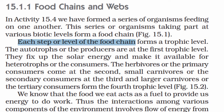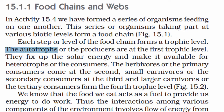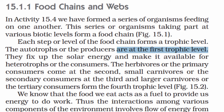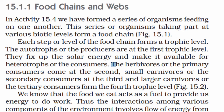Each step or level of the food chain forms a trophic level. Trophic levels can be introduced in this food chain — every step is a trophic level. The first trophic level consists of autotrophs, which are the producers. They use solar energy and fix it up, making it available for heterotrophs or consumers.